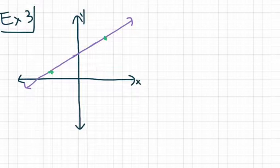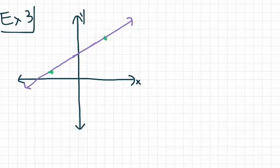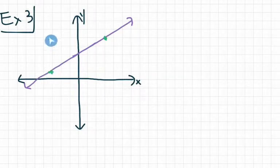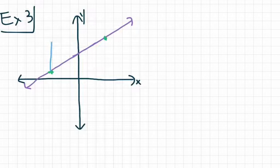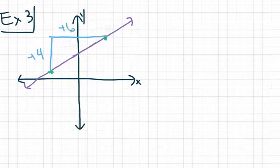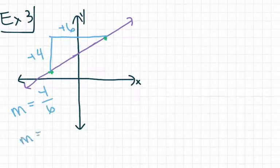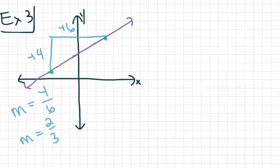For our next example, we again have our first point at negative 3 comma 1 and our second point at 3 comma 5. We start with the point that's further to the left and rise up or down until we're level with the other point. In this example, we want to rise up, giving that a value of plus 4, and then run right until I end up at the other point, giving that a value of plus 6. So my slope here, m is equal to 4 over 6, which reduces to 2 thirds. Let's take a look at one more and then we'll move on.